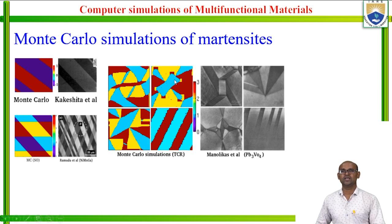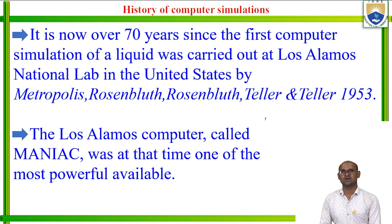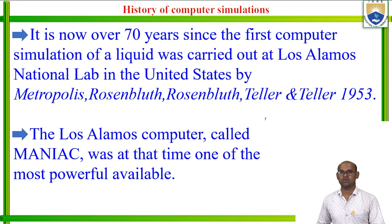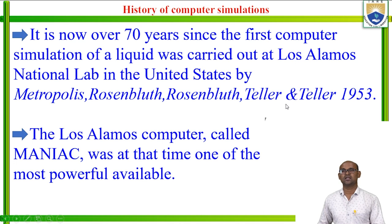Before going into details of multifunctional materials, I will give a brief introduction to the history of computer simulations — what are these computer simulations and how did they start? Computer simulations were started around 1953 by Metropolis, Rosenbluth, Rosenbluth, Teller, and Teller. It is now over 70 years since the first computer simulation of a liquid was carried out at Los Alamos National Lab in the United States.